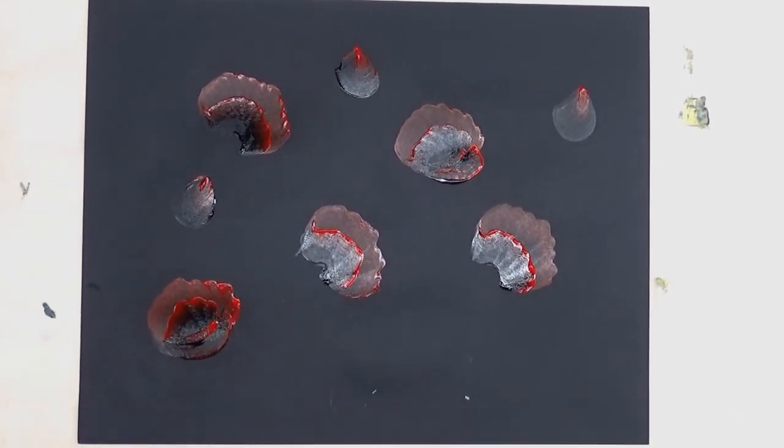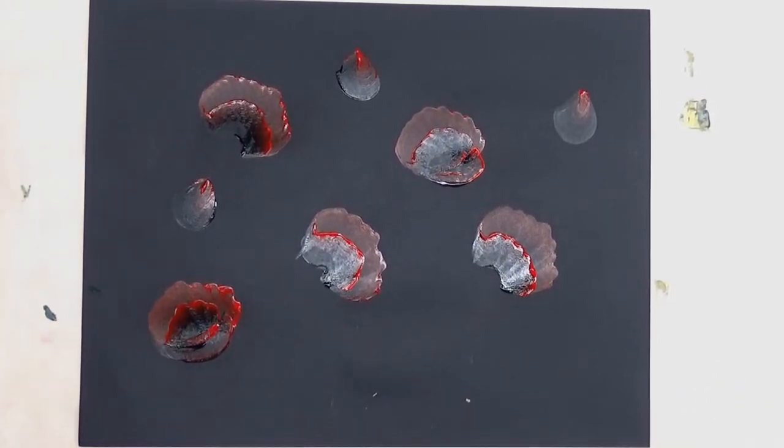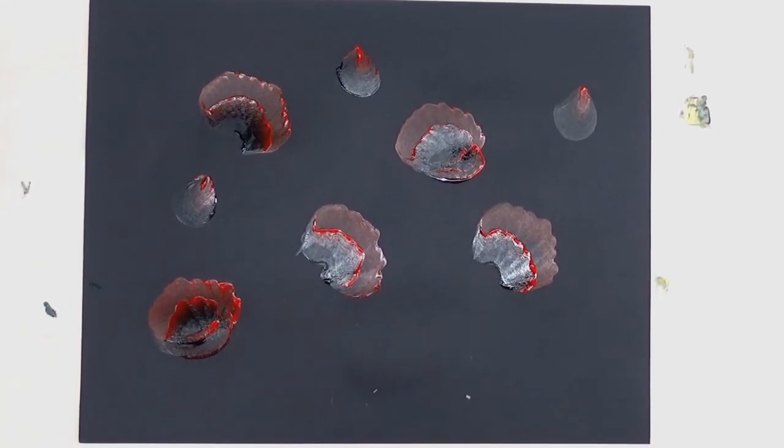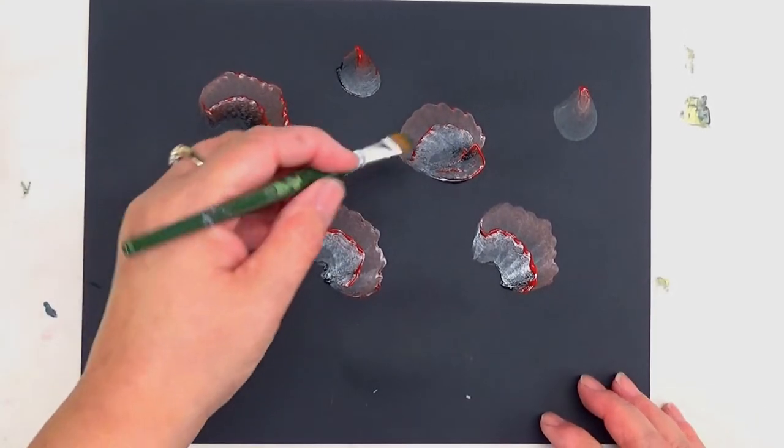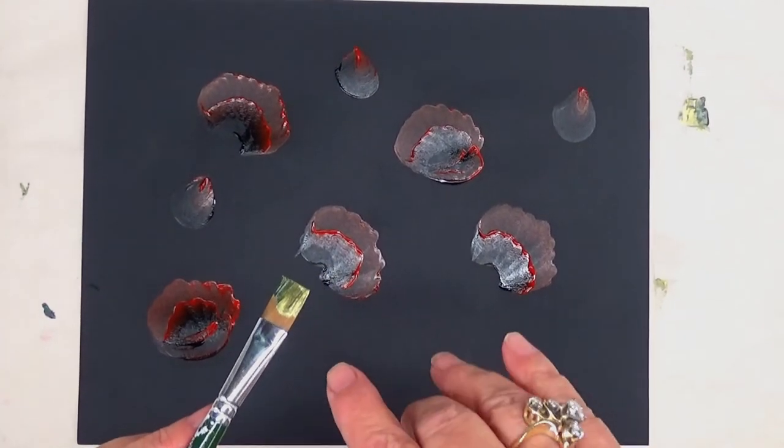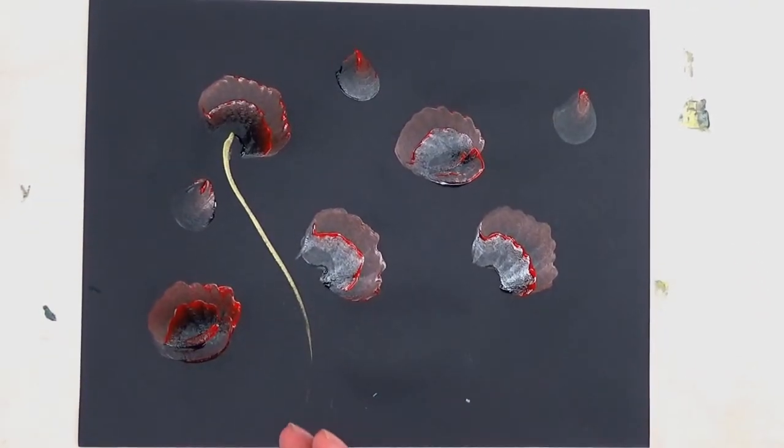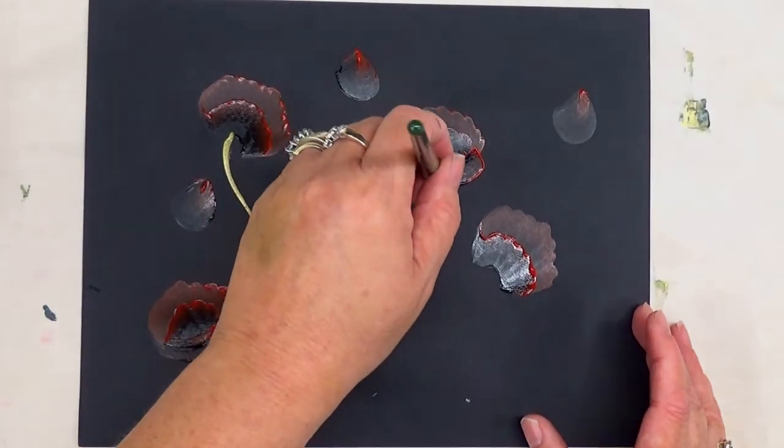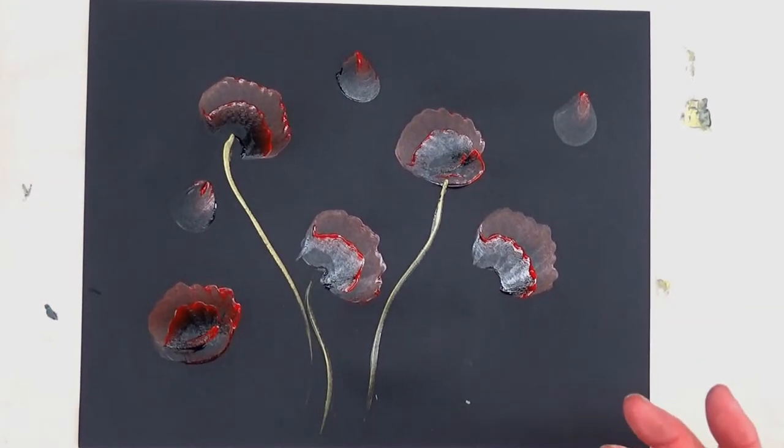Now I'm going to switch over to my peridot and my thicket to start putting in some leaves and vines. Double loading the brush with peridot and thicket—I really like the combination of the two together. I'm going to do stems with my brush going this way so more of the lighter green, the peridot, shows. This is just adding some wispy stems into the painting.